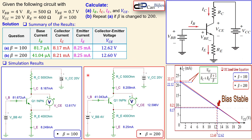This bias-stable behavior is very important for amplifier design, which we will explore in later discussions. One drawback of this circuit is that it requires two separate DC sources, which can be addressed using a different circuit configuration shown in later videos. If you have any questions, please let me know. See you next time — take care.